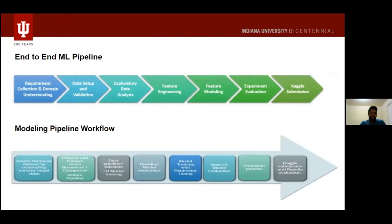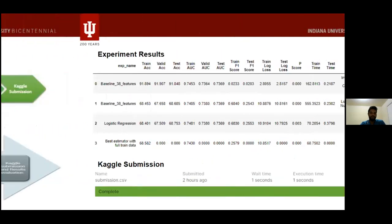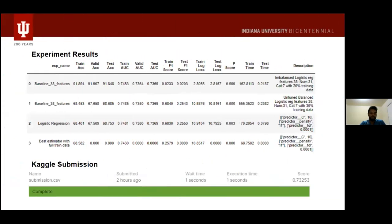We used various performance metrics to evaluate the model and based on the best results we did a final submission. We performed a total of four experiments on the baseline model: one with imbalanced data, one with balanced data, one with the tuned model, and the final one with the best model to run the whole subset of training data.